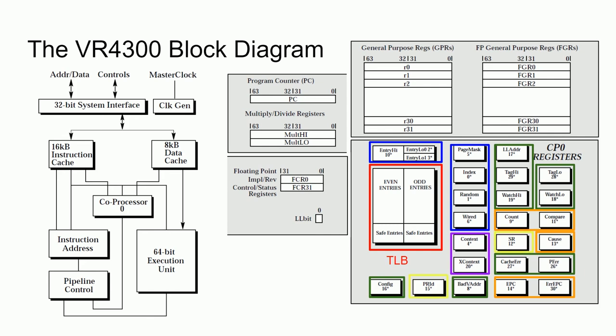If this all seems overwhelming, you're not alone. Keep in mind this is a processor from 1993, where newer ones are orders of magnitude more complicated. On top of that, this was only a high-level overview of the VR4300. In the next video, I will cover the VR4300 data path and pipeline. For a quick spoiler, the pipeline is not as simple as the MIPS Technologies datasheet and original patent make it seem.